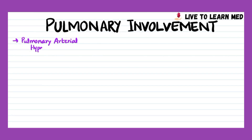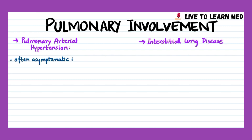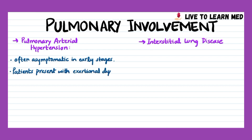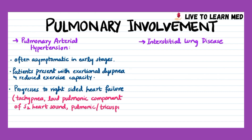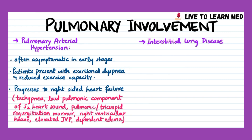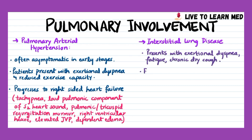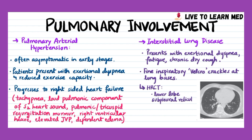The two principal forms of lung involvement in systemic sclerosis are interstitial lung disease and pulmonary arterial hypertension. Pulmonary arterial hypertension is often asymptomatic in early stages; patients present with exertional dyspnea and reduced exercise capacity, and with disease progression signs of right-sided heart failure appear. Physical examination may show tachypnea, loud pulmonic component of S2, pulmonic or tricuspid regurgitation murmur, palpable right ventricular heave, elevated jugular venous pressure, and dependent edema. Interstitial lung disease presents with exertional dyspnea, fatigue, and chronic dry cough; examination may reveal fine inspiratory velcro crackles at the lung bases, with characteristic imaging findings of lower lobe subpleural reticular linear opacities and ground glass opacifications.